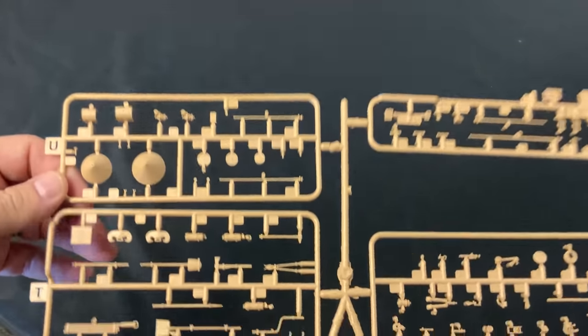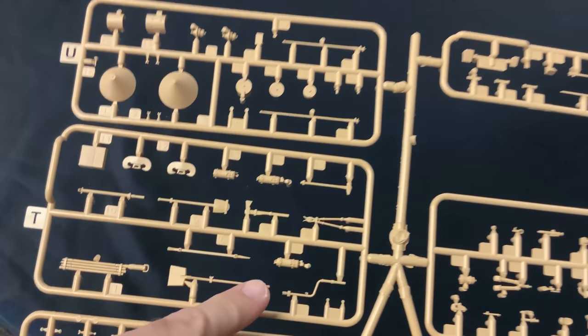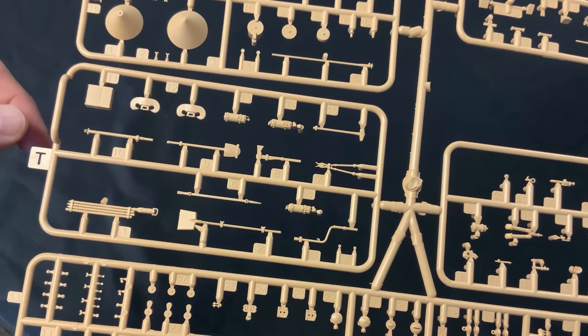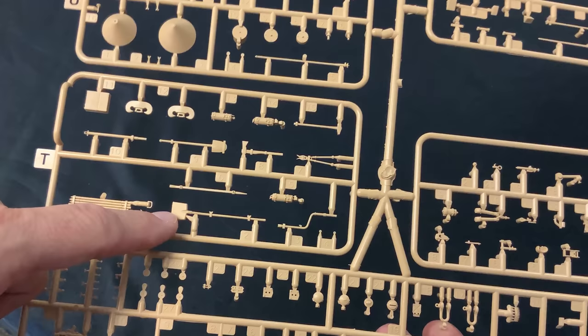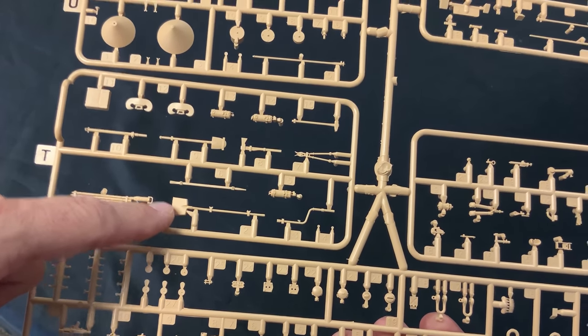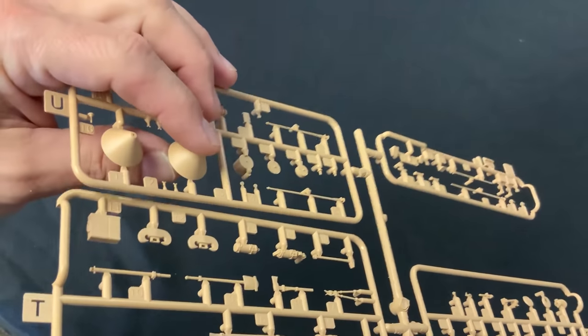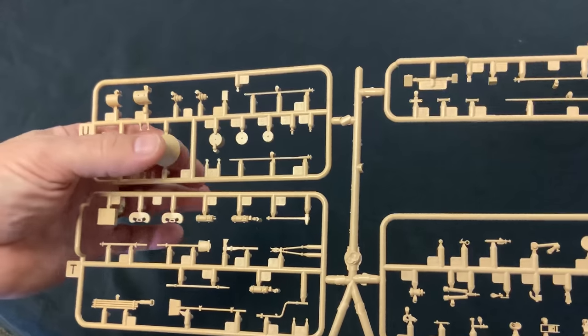Let's kind of go through the different sprues here. This is the tool sprue and some of the other accessories. Then you got your clippers, your shovels. They give you multiple different types of shovels. This looks like the shovel that's on the Tiger, on the front glacis plate of the Tiger. Not sure what the heck these are, have not seen that before. I'm sure it's for something inside the kit, but actually there's another set inside there as well.